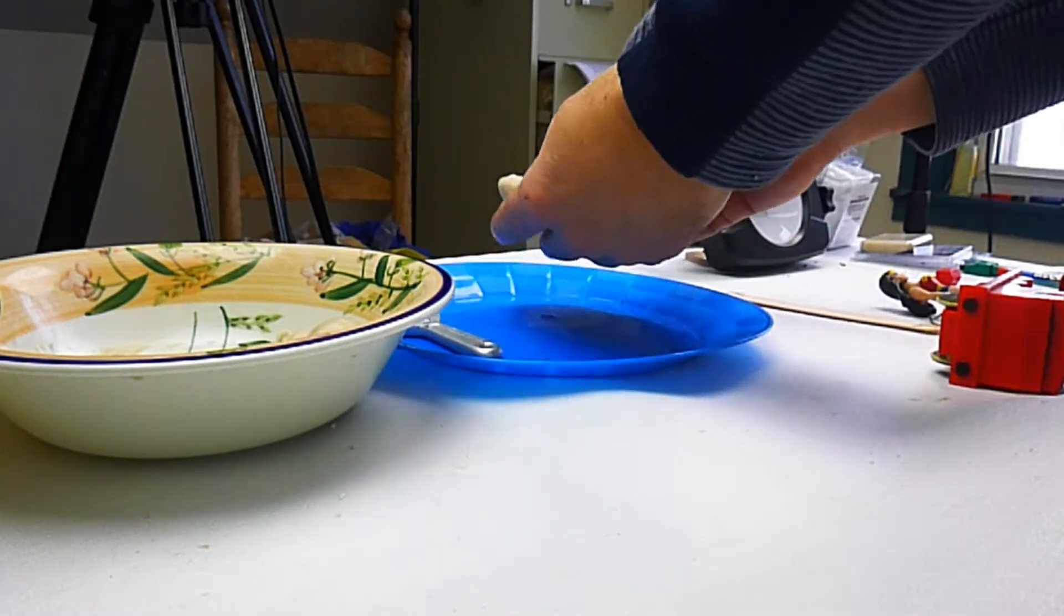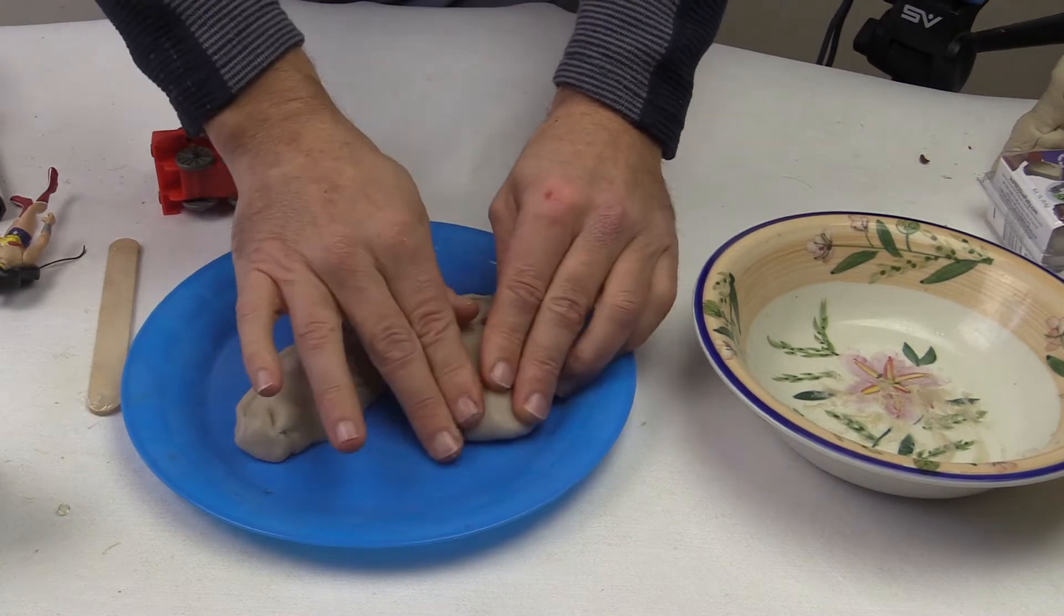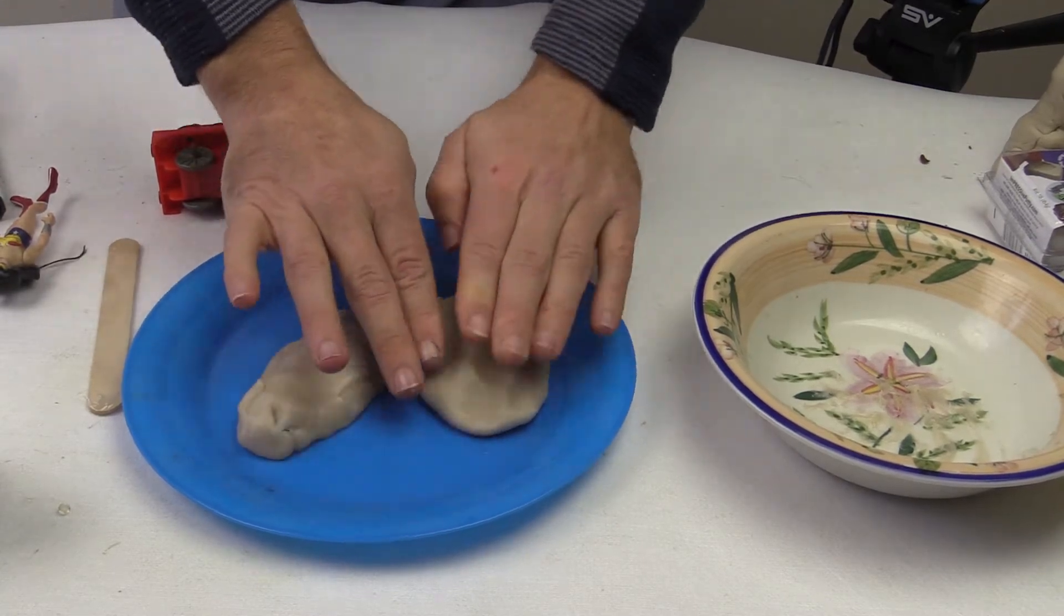You can actually let it cool to below 100 degrees Fahrenheit and still form it as we do here. And press, thus the name, the putty over your shapes.